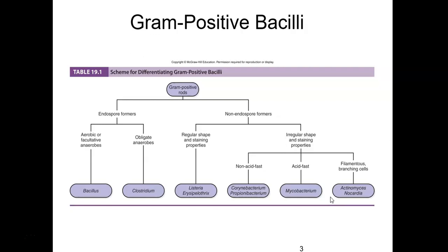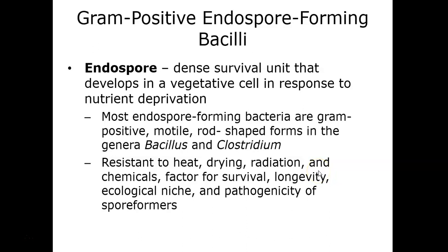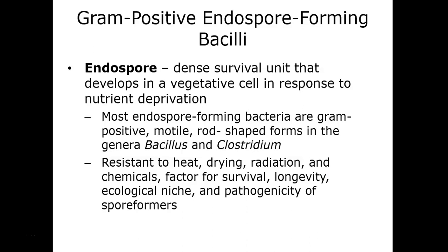This is like all of the other disease chapters, just a summary of Table 19.1 in your book — an overview that walks us through a lot of what we're going to cover. So let's start first by talking about what an endospore is.